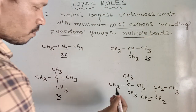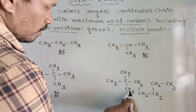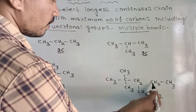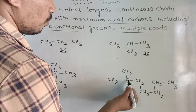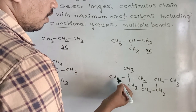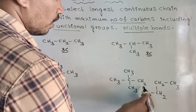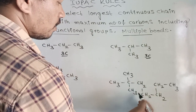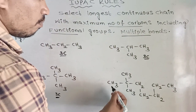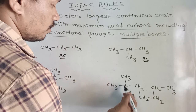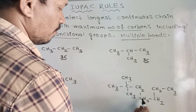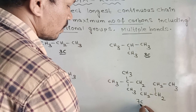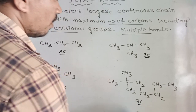In this example, one path gives 1, 2, 3, but another path gives 1, 2, 3, 4, 5, 6, 7. In this direction, the chain is zigzag but the chain is continuous: 1, 2, 3, 4, 5, 6, 7. The maximum number of carbons in this example is 7.